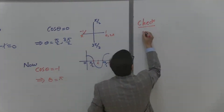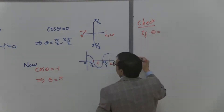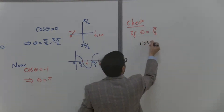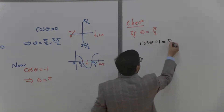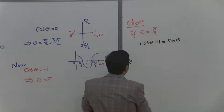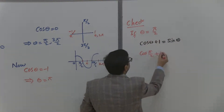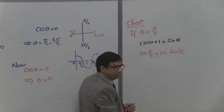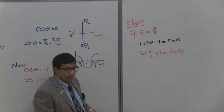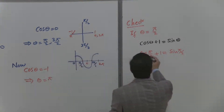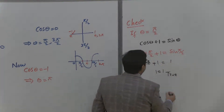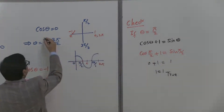If theta is pi over 2 and we substitute into the original equation cosine theta plus 1 equals sine theta: cosine(pi/2) plus 1 equals sine(pi/2), which gives 0 + 1 = 1. This is true, so the first value theta equals pi over 2 satisfies the equation.